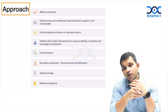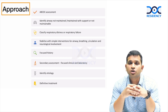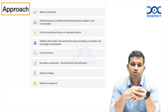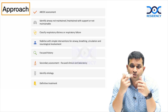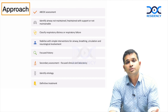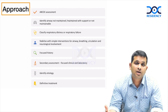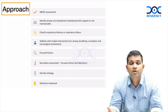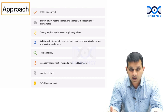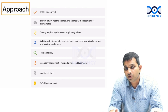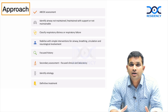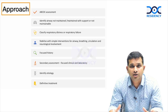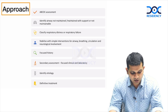Then comes the etiological evaluation. Is it a viral illness or a bacterial illness? Sometimes we send a nasopharyngeal swab, sometimes a blood culture, sometimes tracheal aspirates — all to identify which organism we are dealing with. Then we start definitive treatment. Remember, the initial stabilization treatment is already given. Depending on what cause we are thinking — bacterial or viral — we give definitive treatment accordingly.